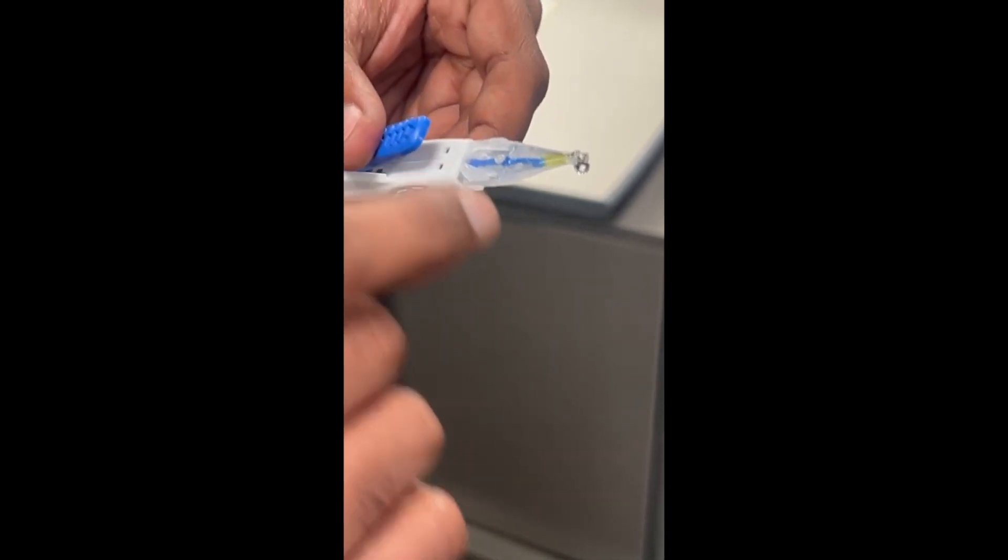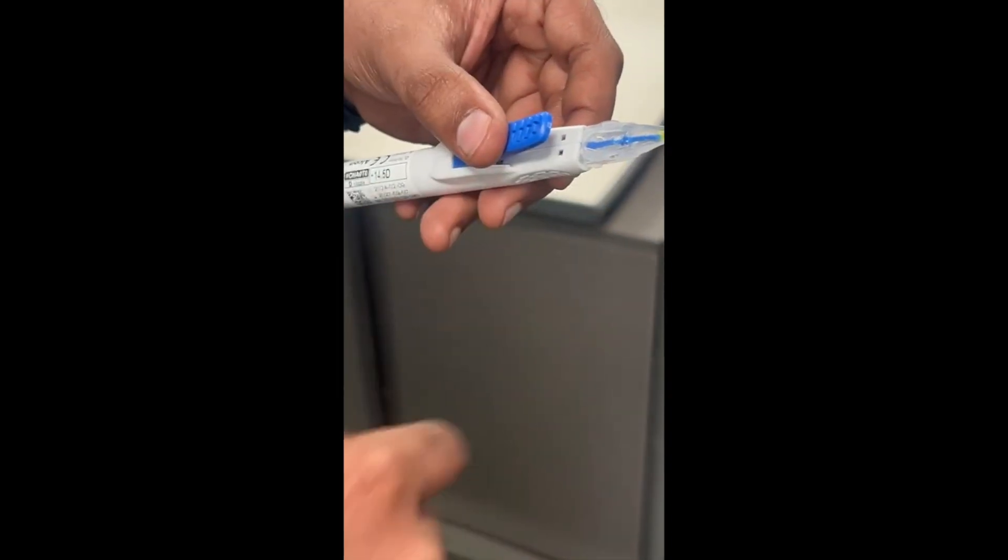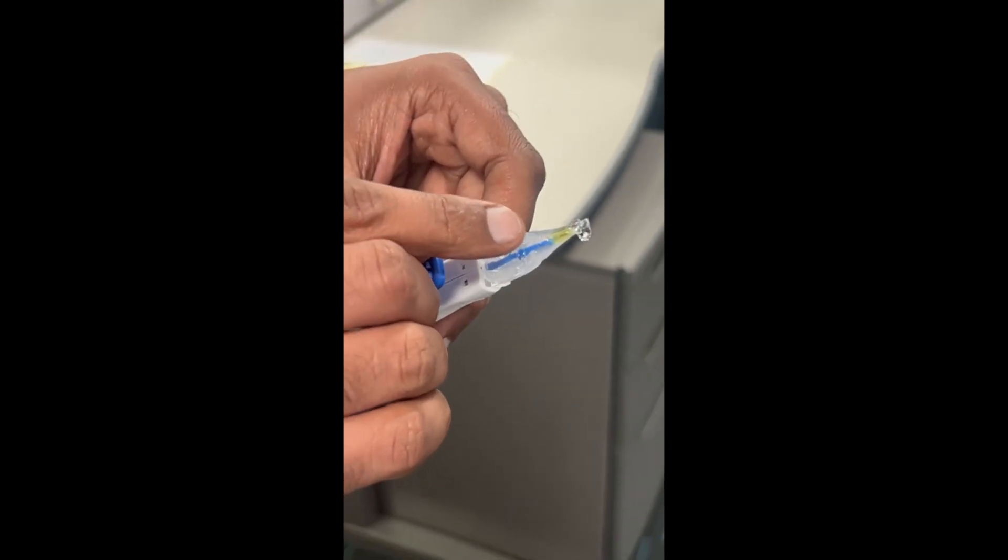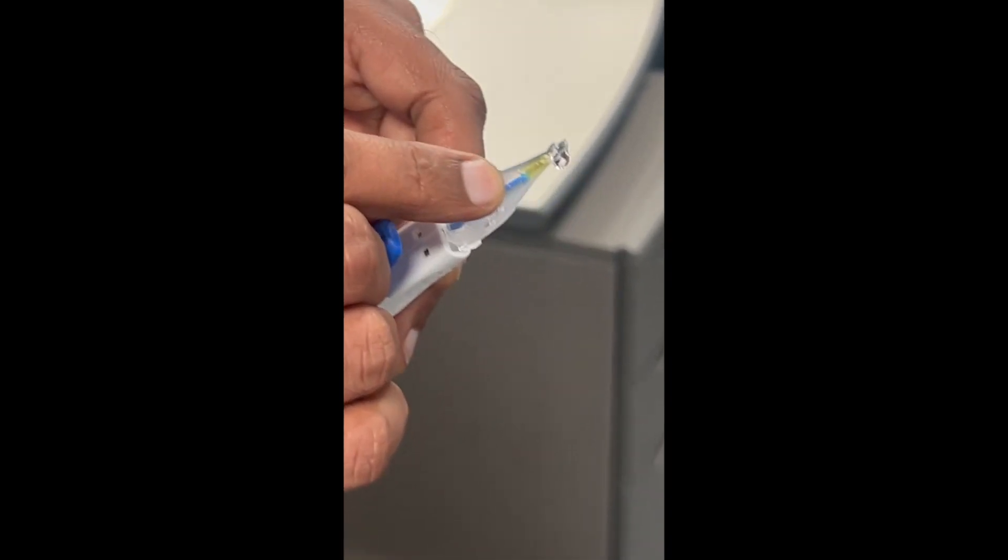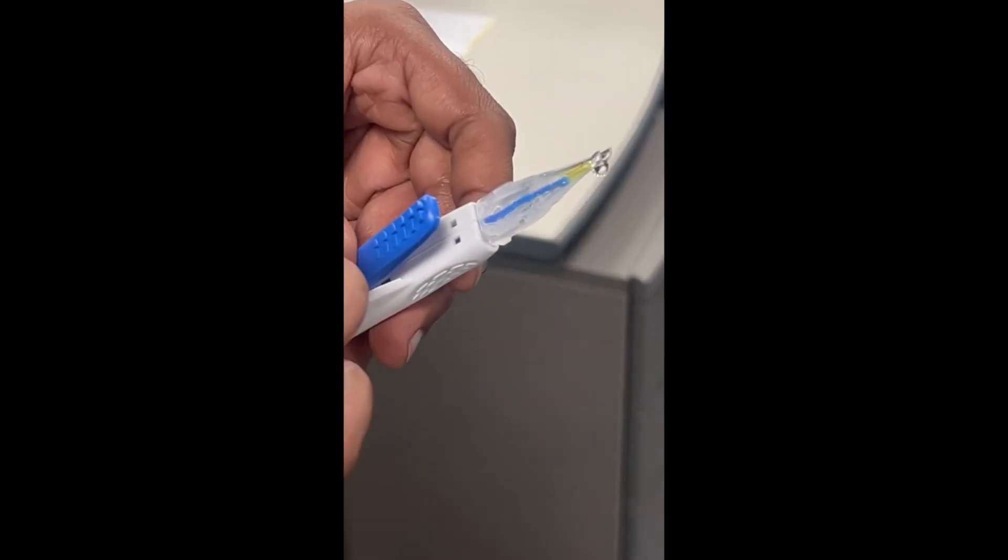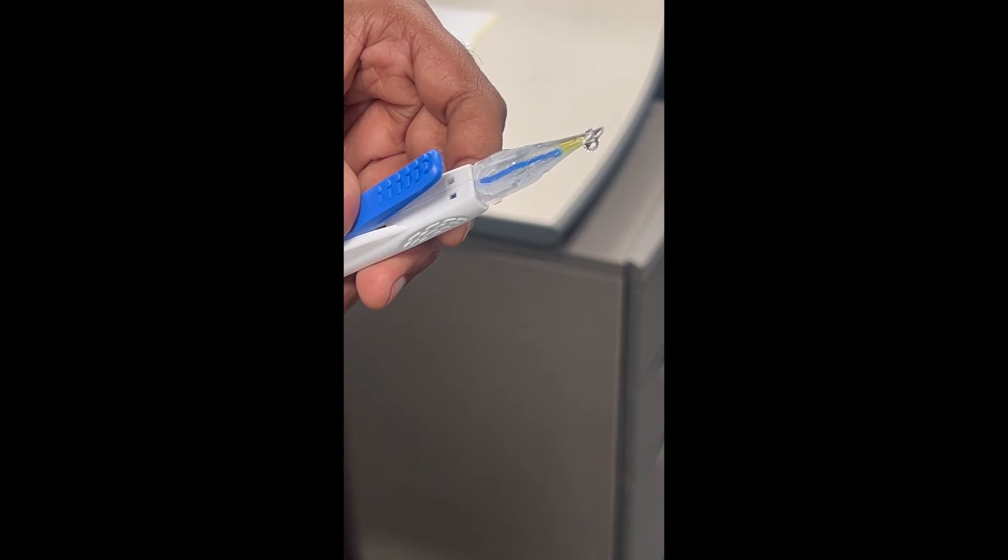But there is only one position where implantation should be stopped and a new lens should be opened. That is when the trailing haptic, instead of folding, came out straight. Then that is the time when implantation has to be stopped. It is the rarest of the rare, which doesn't happen that easily.